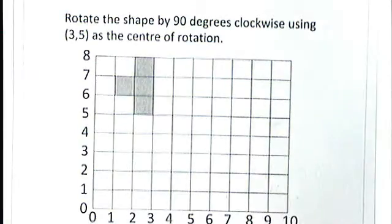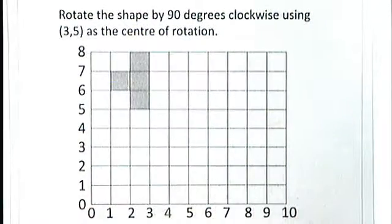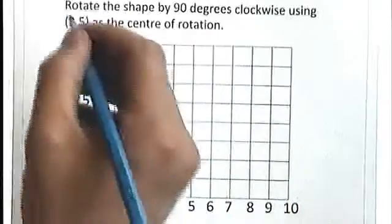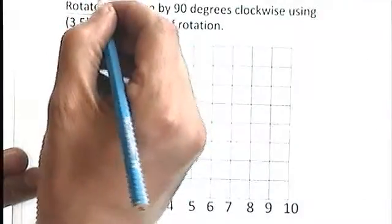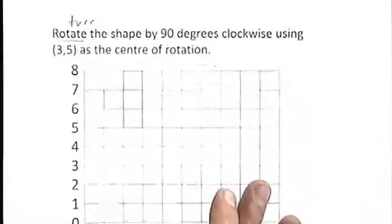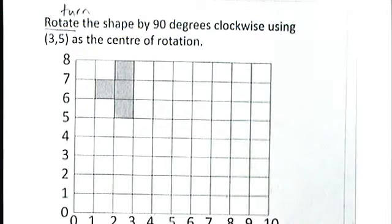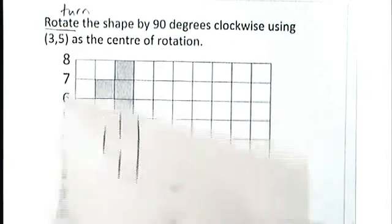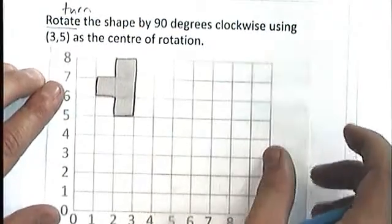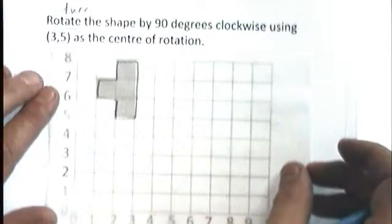So let's have a look at how we rotate this shape. First of all, we read the question, and it says turn the shape. Rotate means turn. So we're going to turn the shape by 90 degrees clockwise using (3,5) as the center of rotation. The first thing to do, trace the shape. I've already traced this one.